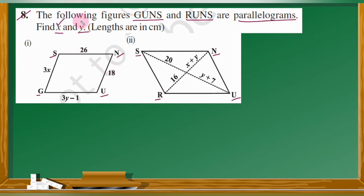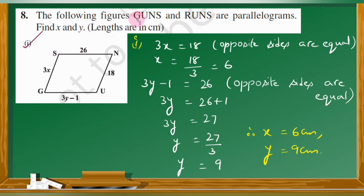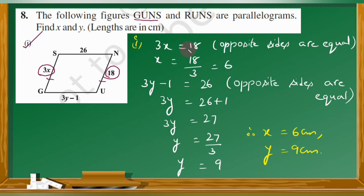In parallelogram GUNS, opposite sides are equal and opposite angles are also equal. Using the property that opposite sides are equal: SG is equal to NU, so 3x equals 18. Dividing both sides by 3, x is equal to 6.